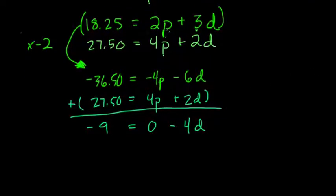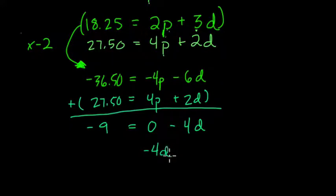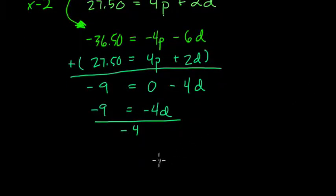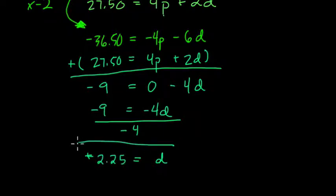So here, that just means negative 4D equals negative 9. Now, to solve for D, we divide by the coefficient of D, negative 4. And that just means D is equal to what? Well, 2 negatives divided as a positive, so we return a positive. 4 goes into 9 twice with a remainder of 1. So that's 2 and a 4th, or 2.25. So a drink is $2.25.